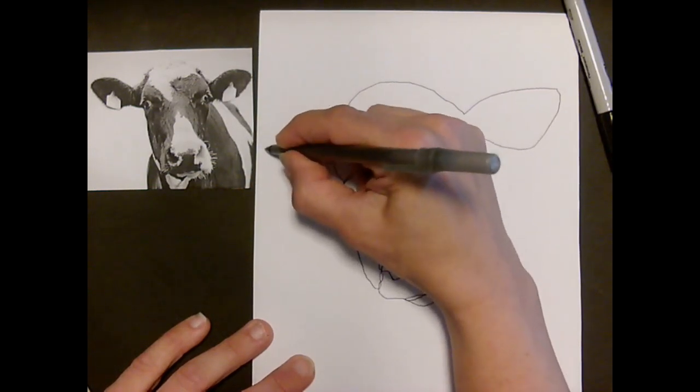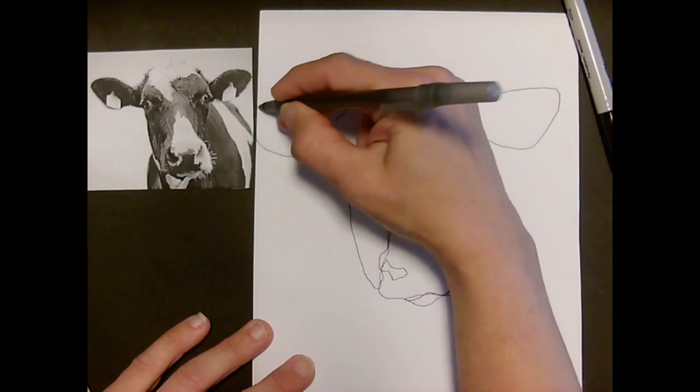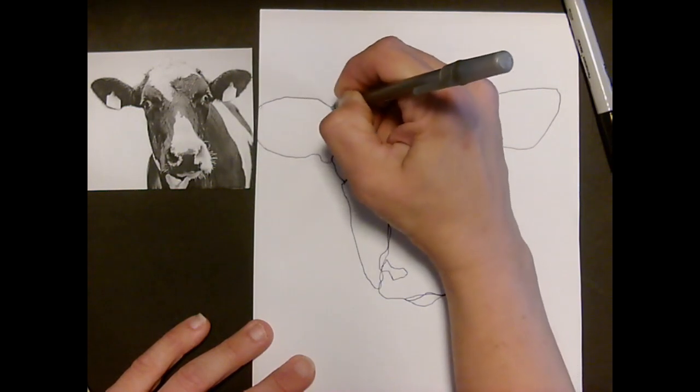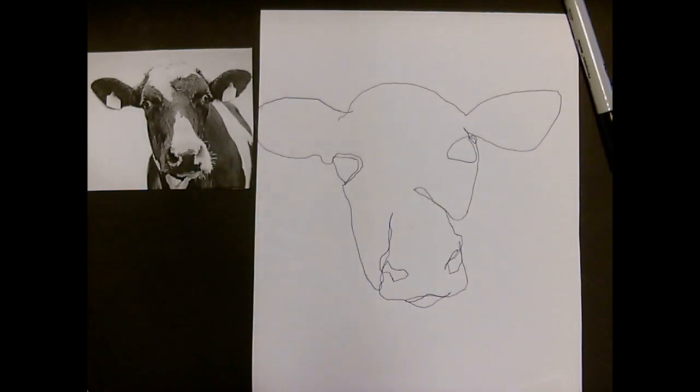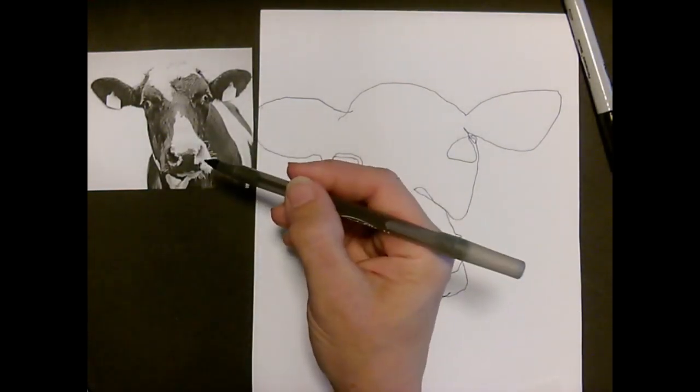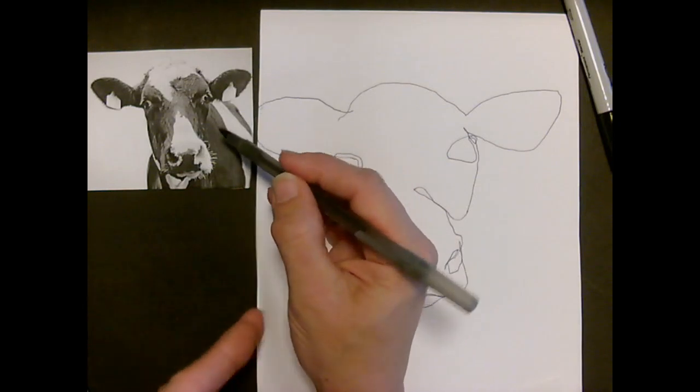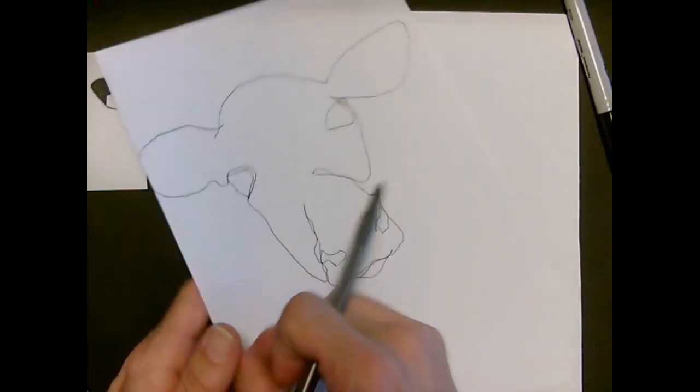And then we'll get the other ear, which may go off the paper a little bit. The idea is not to pick up your pen. So there's a contour drawing of this cow right here. I'm going to go ahead and practice with another picture.